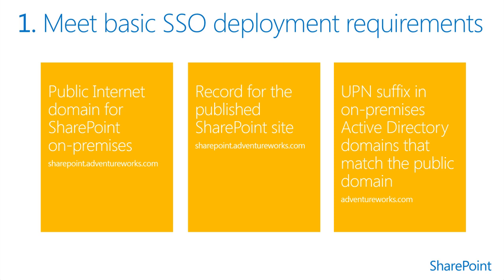If you plan to use Active Directory Federation Services as your security token service, you'll need to download, install, and deploy Active Directory Federation Services 2.0 on a Windows Server 2008 or Windows Server 2008 R2 server. Also, if users will be connecting from outside your company's network, you must deploy an ADFS 2.0 proxy and install the ADFS role service on a Windows Server 2012 or Windows Server 2012 R2 server.